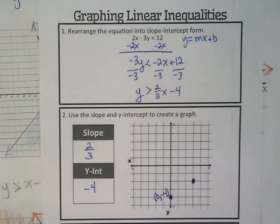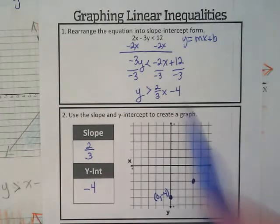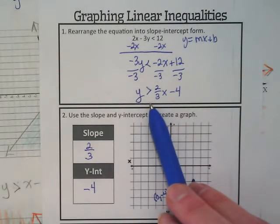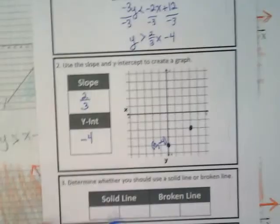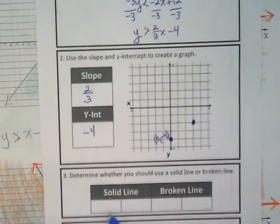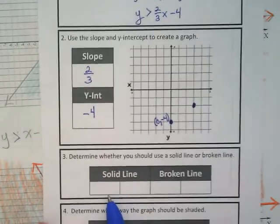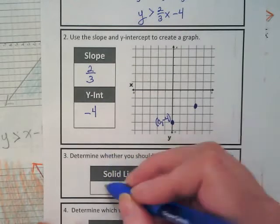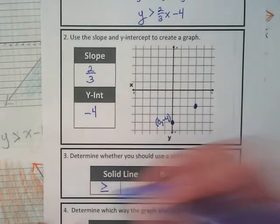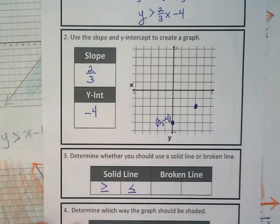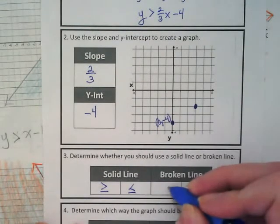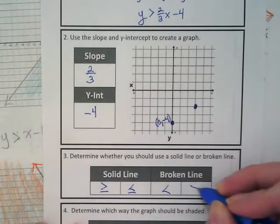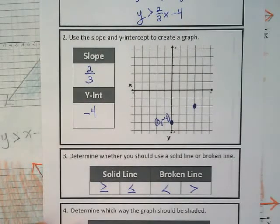Now before you draw your line in you have to look at the symbol. And our slope is greater than, not greater than or equal to. So what kind of line are we going to put? That's what's being asked down here. So let's fill this in as our graphic organizer. If it's a solid line we're going to have greater than or equal to or less than or equal to. If we have less than or greater than we end up with a broken line or a dashed line.